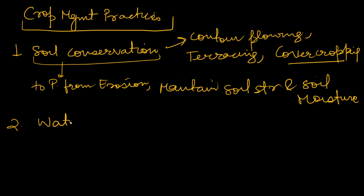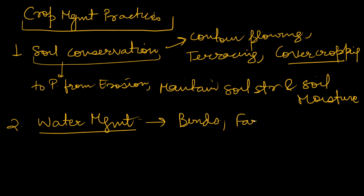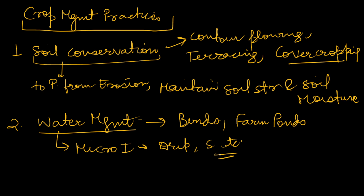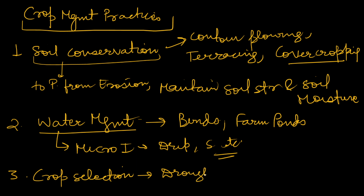Because it is a dryland area, water management is key. We can construct various bunds and farm ponds, and use micro irrigation methods such as drip irrigation and sprinkler irrigation to protect and properly manage water, since the water quantity is already less and there is no scope for wastage. Third, we will do proper crop selection — selecting drought-resistant crops suited for local conditions, which generally have deep roots and a short growing season. The best crop here is millets.